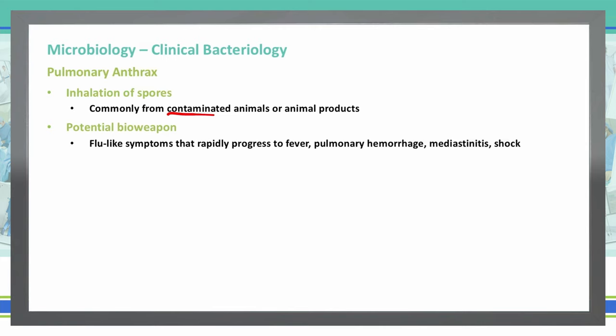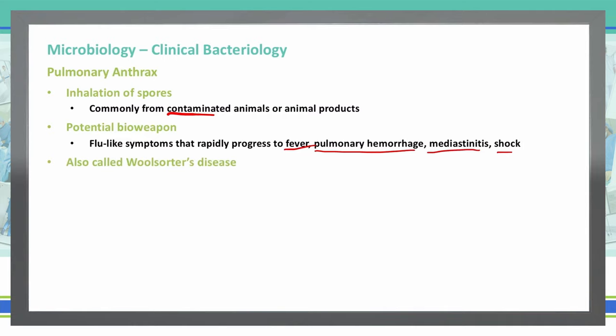Symptoms will progress to fever, pulmonary hemorrhage, mediastinitis, and shock. We also call this wool sorter's disease, because contaminated sheep are very often found to have Bacillus anthracis in their wool. People who are wool sorters or shepherds could become infected with pulmonary anthrax while around their sheep, especially when shearing them.